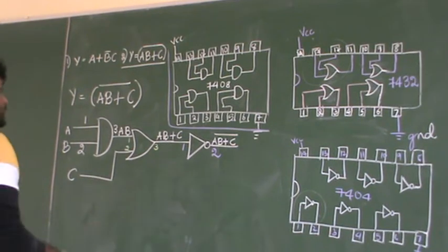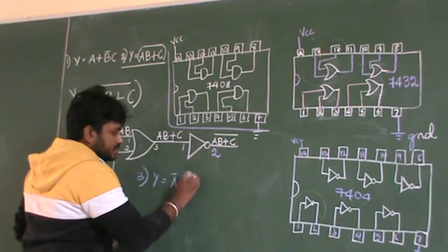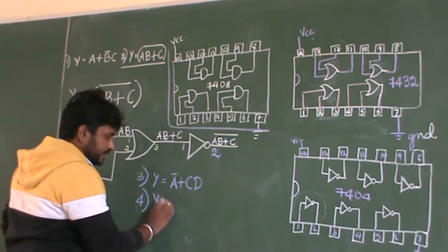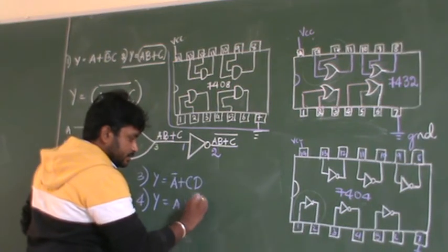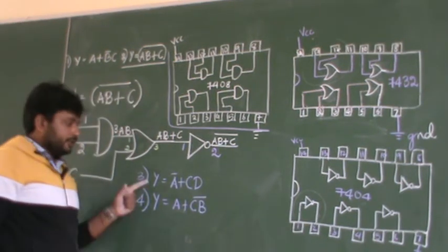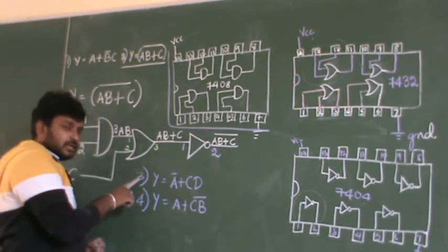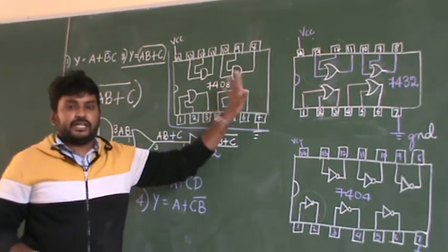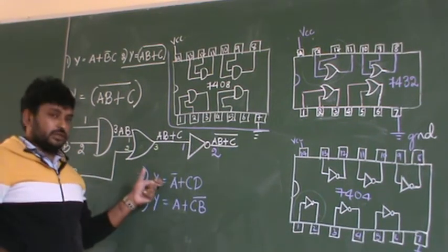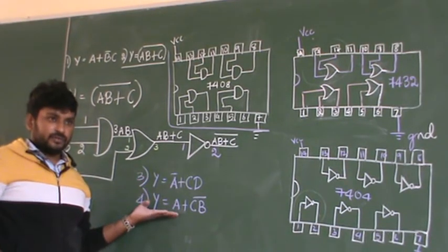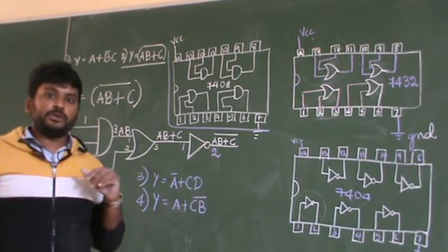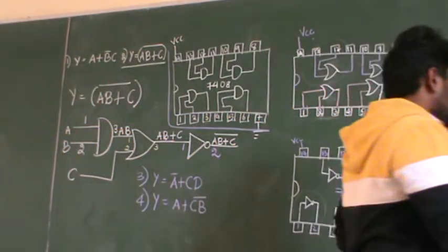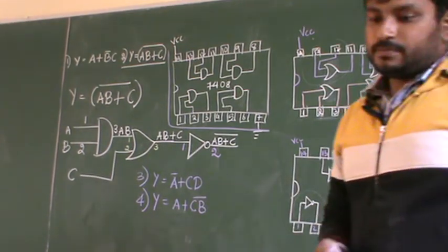Copy down this. The assignment is: Y equals A̅ plus C into B — here there is no whole bar. One more assignment: Y equals A plus C into B, the whole bar. For both assignments, you have to write the circuit diagram and also the pin numbers. Write the pin configurations in your observation notebook, then scan and send it. I am giving these questions as assignments — you can send the answers for that.